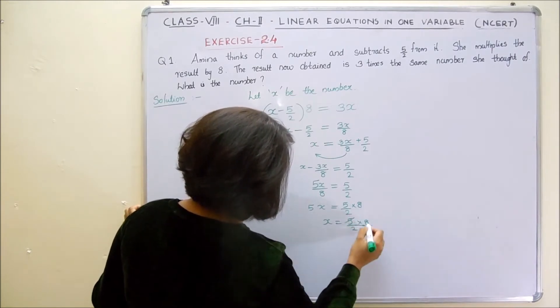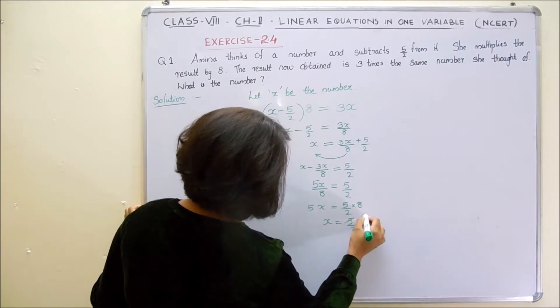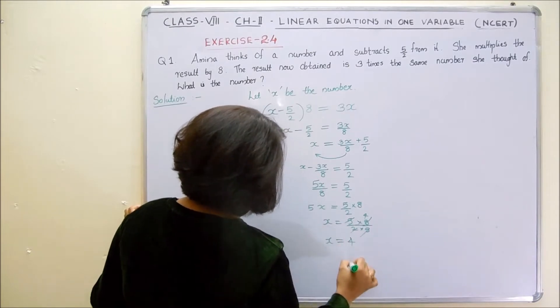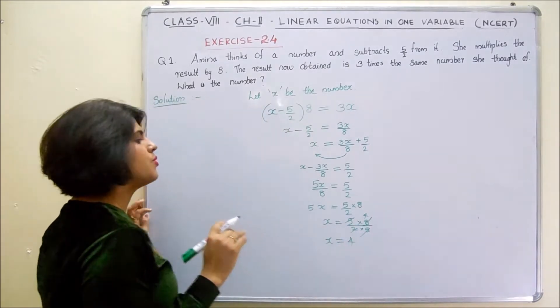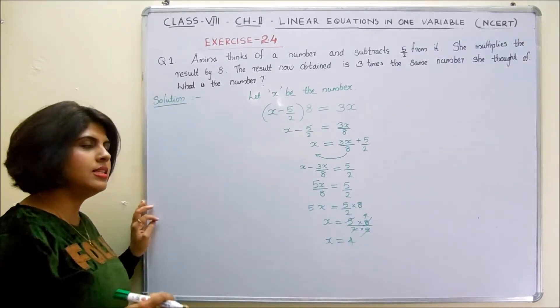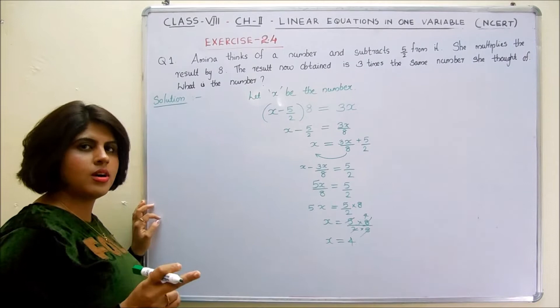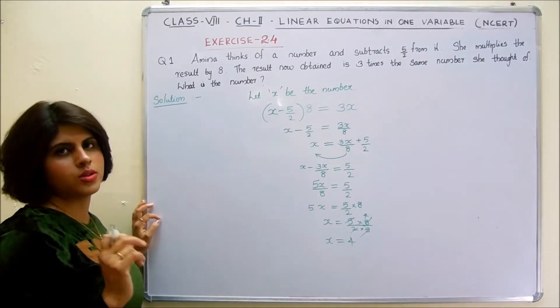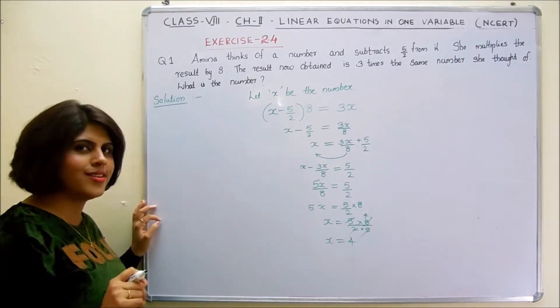Then x equals 5 by 2 into 8 by 5 by transpose method. The 5s cancel, then this would be 4. Then x equals 4. Therefore x equals 4 is the number Amina thought about.